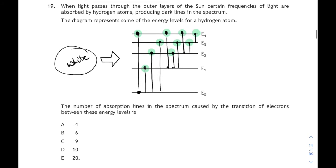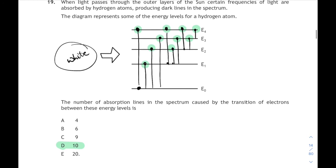Is there an equation to do this? Well yes there is, but it's not on your relationship sheet. It's n squared minus n divided by 2, where n is the number of energy levels. So there are five energy levels here. So 5 squared minus 5 divided by 2 is equal to 10. And that works with any number of energy levels. But maybe not recommended. I would count the number of jumps.